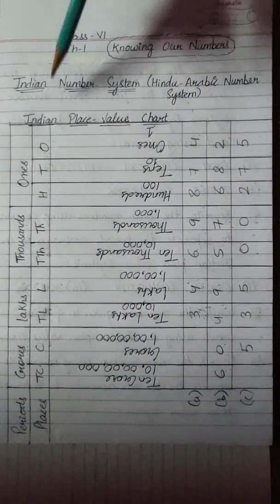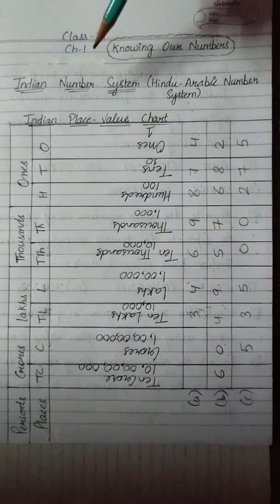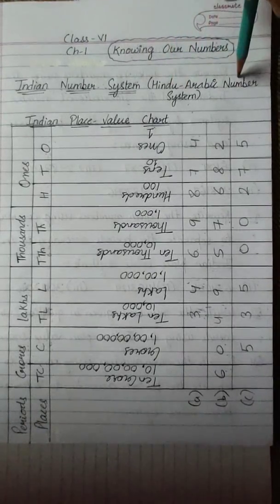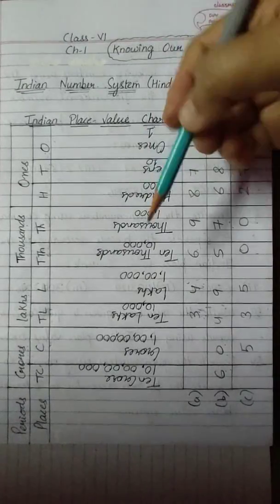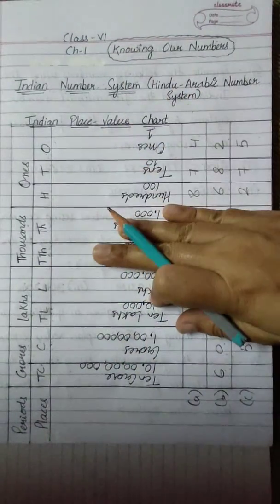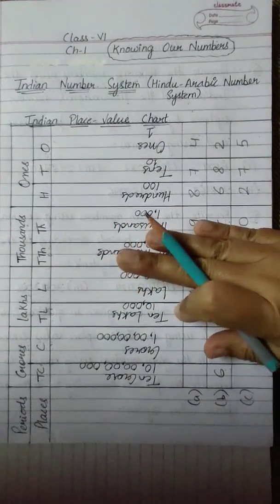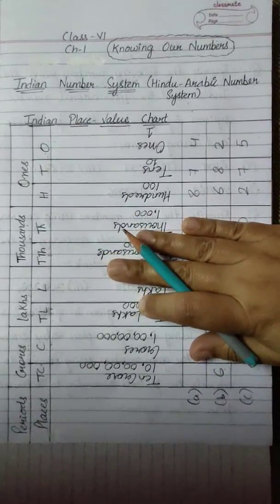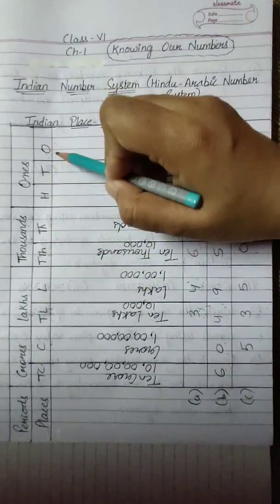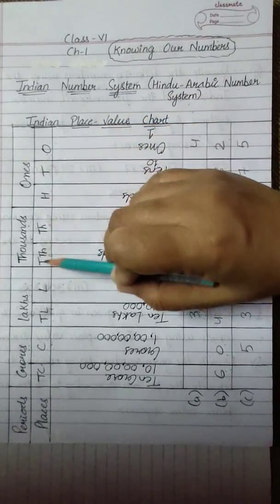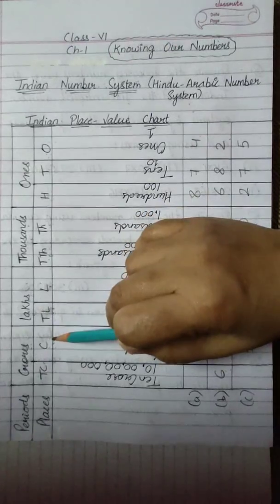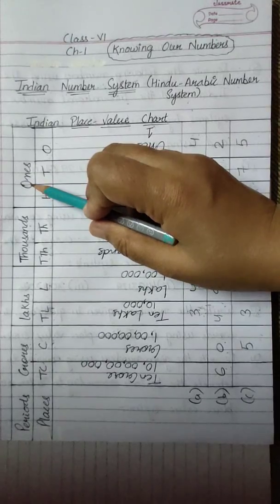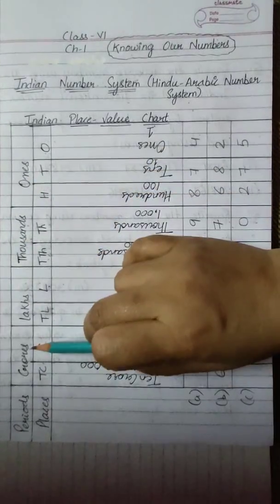Firstly, I am going to take the Indian number system. The Indian number system is also known as the Hindu-Arabic number system. Look at the Indian place value chart shown here. To read and write large numbers, we use this place value chart. In this place value chart, the 9 places — ones, tens, hundreds, thousands, ten thousands, lakhs, ten lakhs, crores and ten crores — are grouped into 4 periods. These periods are ones, thousands, lakhs and crores.